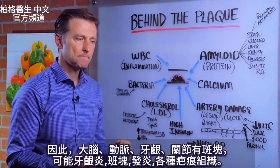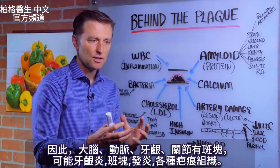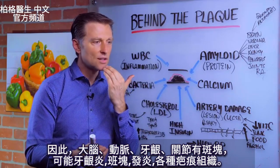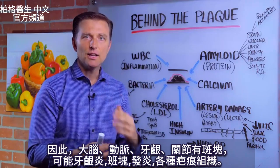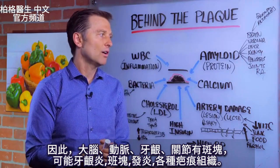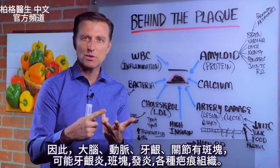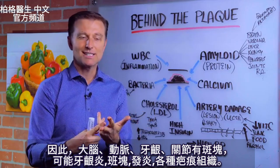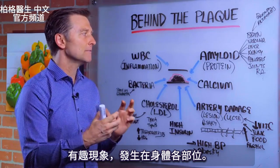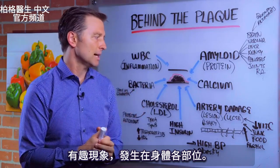If you think about it, you have the brain, the arteries, the gums — there's gingivitis and all that plaquing. In the joints you have inflammation, plaquing, and all sorts of scar tissue. So there's an interesting phenomenon occurring in different parts of the body.